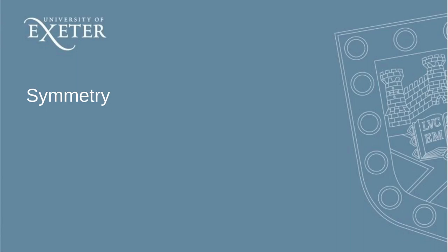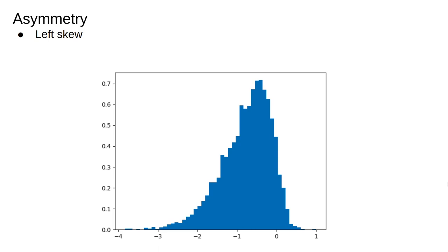In this video we're going to talk about statistics that are used to describe the symmetry of data. There is a class of summary statistics that describe the symmetry or skew of the distribution of data.